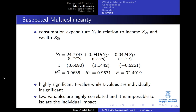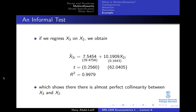To check, we run an auxiliary regression of X3 on X2. The results show that 99% of the variation in X3 (wealth) is explained by the change in X2 (income). This means they are very closely related — almost perfectly collinear together.